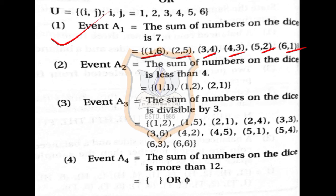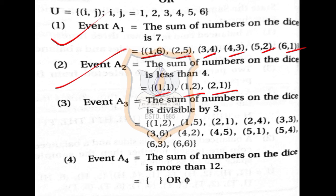Event A2 — sum less than 4: 1+1=2, 1+2=3 qualify. 1+3=4 does not. From the second row, 2+1=3 qualifies; 2+2=4 does not. From the third row, 3+1=4 does not qualify. So the sample points are (1,1), (1,2), and (2,1) — only 3 sample points.